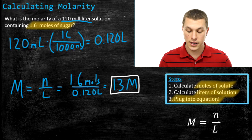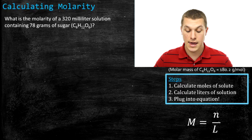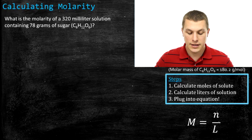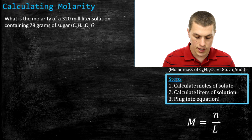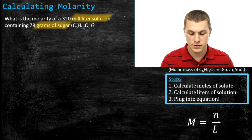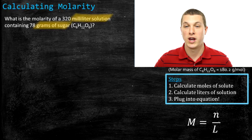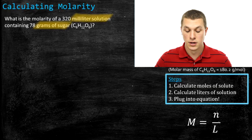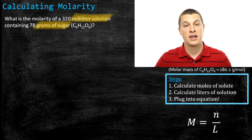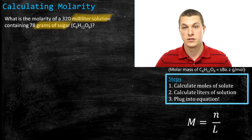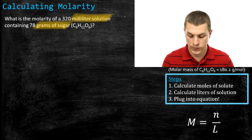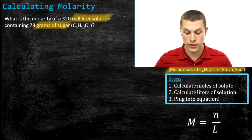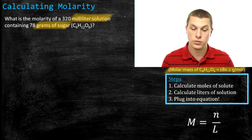One more problem where we have to calculate both the liters of our solution and the moles of our solute. The problem says: what is the molarity of a 320 milliliter solution containing 78 grams of sugar? Now we have grams instead of moles, and milliliters instead of liters. This is actually how problems normally look in the lab — we can't directly measure moles, we measure grams on a scale. To go from grams to moles, we use molar mass. For glucose (sugar), the molar mass is 180.2 grams per mole.